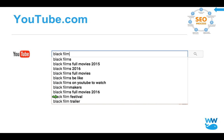YouTube.com is also a search engine — it's the number two search engine next to Google Search. It does the same thing: I can type in 'black film' and suddenly get ideas — people looking for movies or black films on YouTube to watch. This can potentially give you other ideas on how to refine your content, or if you're building out your YouTube or video strategy.